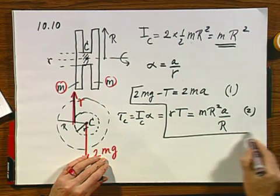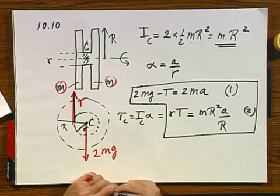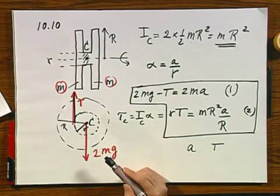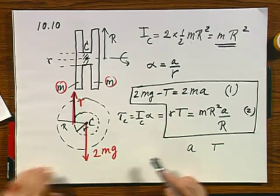So here we have two equations, and we have two unknowns, and you should be able to solve for both A, and you should be able to solve for T. It's completely identical to what we have done before. There really is no difference, except that the geometry is slightly more complicated.